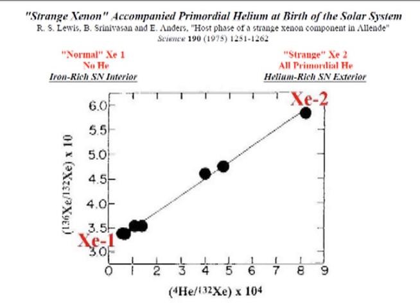Since this slide was first shown at the 1976 National Meeting of the American Geophysical Union in Washington, D.C., many new measurements have been found. First, normal XE1 was found without significant primordial helium in iron-rich inclusions of several meteorites.